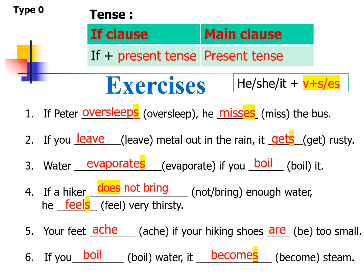I believe all of you could answer all the questions correctly. Number four was just a little bit tricky. When doing exercises in the exam, make sure you use present tense in the if clause, and the main clause is also present tense for type zero. Whenever you see he, she, it, add s or es to the verb. When it is negative, use 'do not' or 'does not.' That's the end of these exercises.